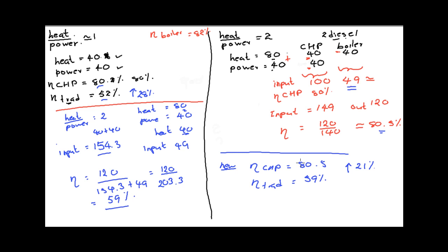At this situation, the savings have been reduced, which means the time taken for the payback period is going to increase. Therefore, when implementing a CHP system, we have to check how much energy we are going to save and in terms of money as well. Heat-to-power ratio is a very vital factor. Normally for diesel engines, the heat-to-power ratio is optimum around 1, but this can change from situation to situation. For further understanding regarding this issue, you should read section 8.4.